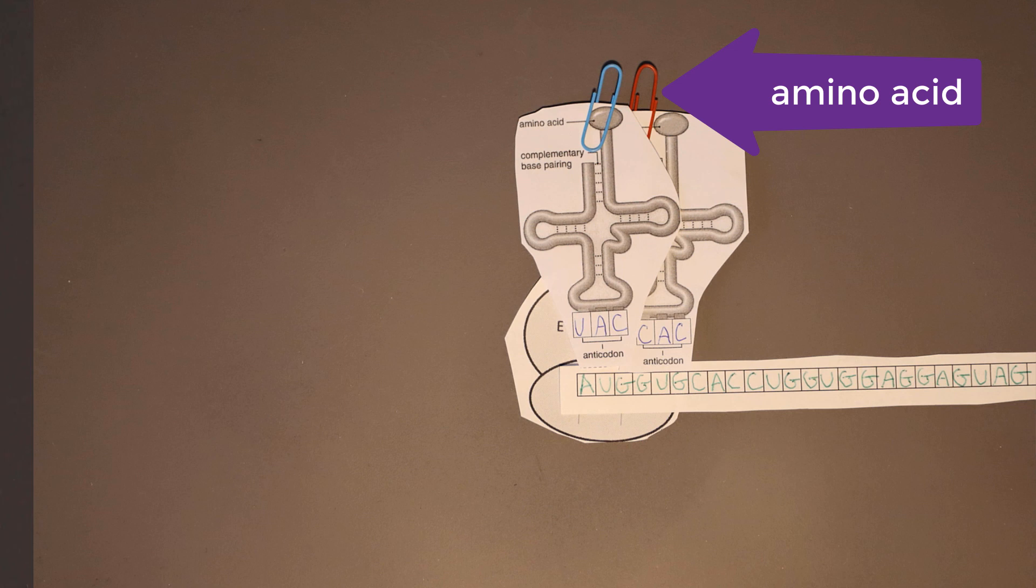First, we're going to take the amino acid off of the tRNA that's in the P site, and we're going to transfer it to the amino acid that's on the tRNA in the A site, like this.